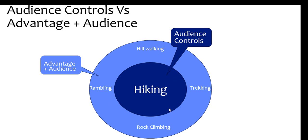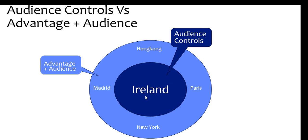There are times when you want to be very specific. For example, looking at location: if you only want to advertise to customers in Ireland and don't want to include customers in Hong Kong, Madrid, New York, or Paris, then that's where you put it into audience controls.